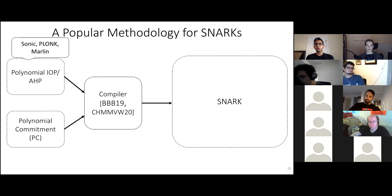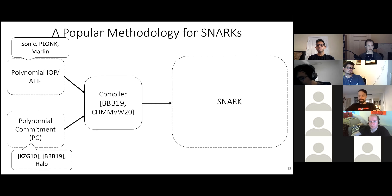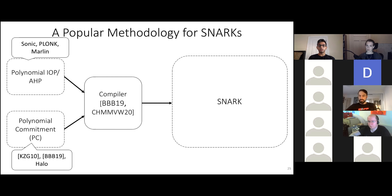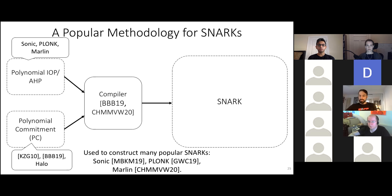In the past few years, people have introduced this methodology for constructing SNARKs by combining an information-theoretic component like a polynomial IOP or AHP with a polynomial commitment scheme, and plugging into standard compilers. Various ways to instantiate both components are known: for the IOP side, Sonic, Plonk, Marlin; for polynomial commitment schemes, KZG10, commitment schemes based on groups of unknown order, the one described in Halo, and others.